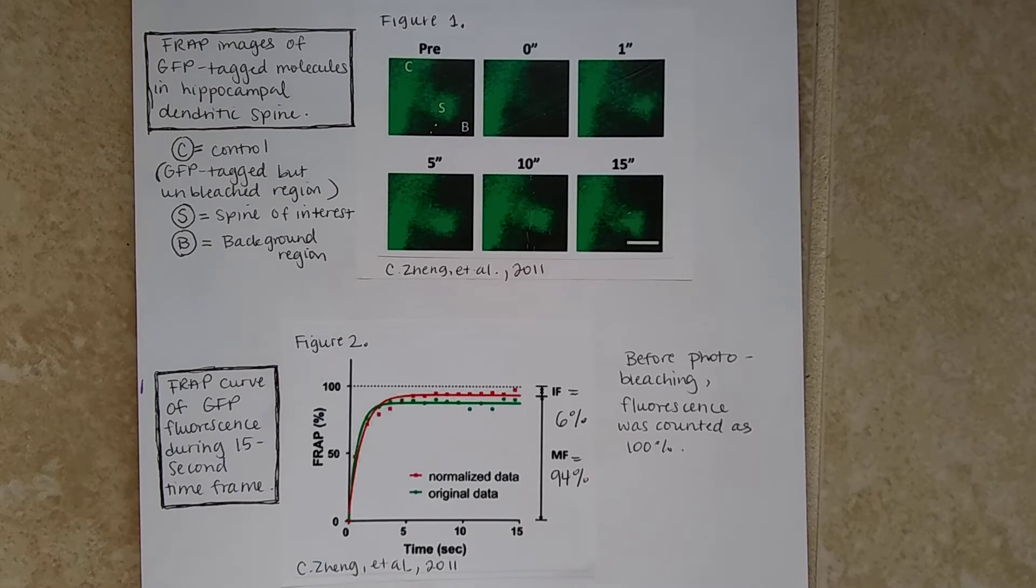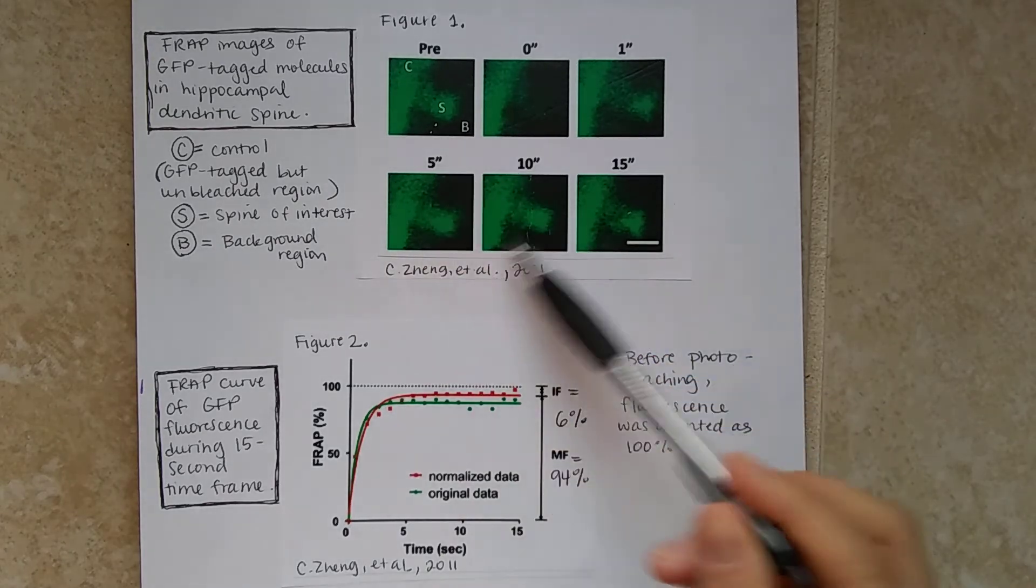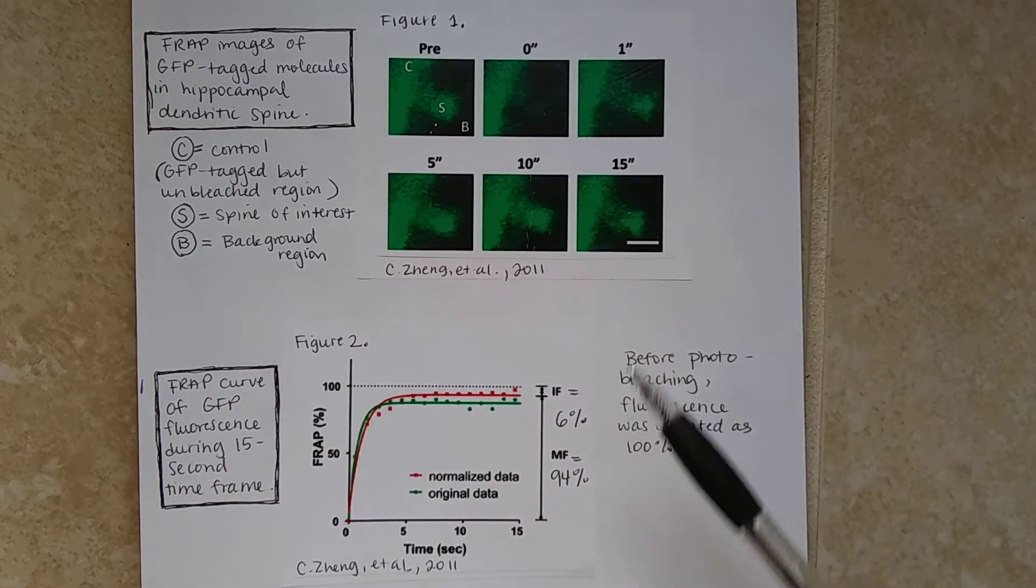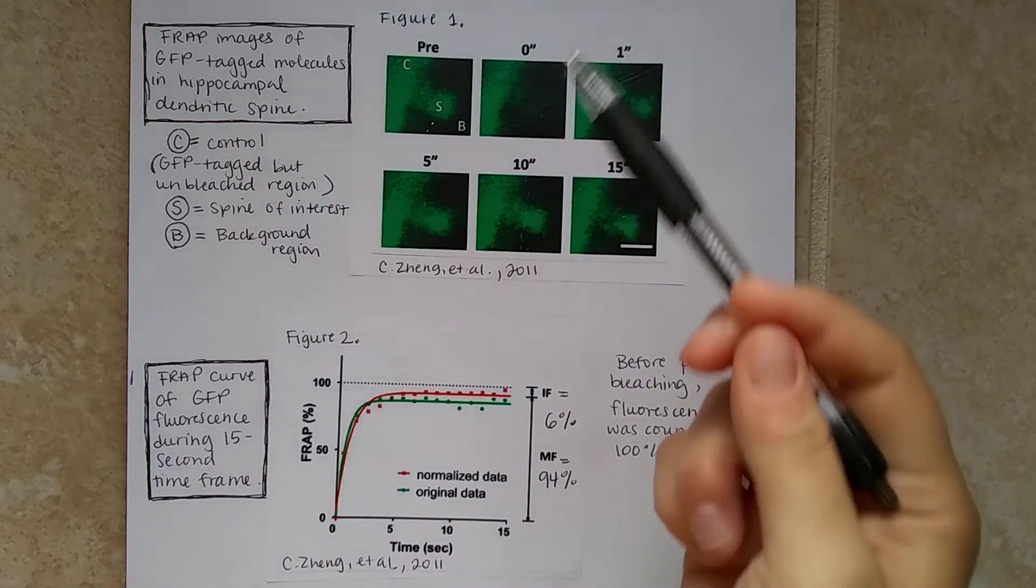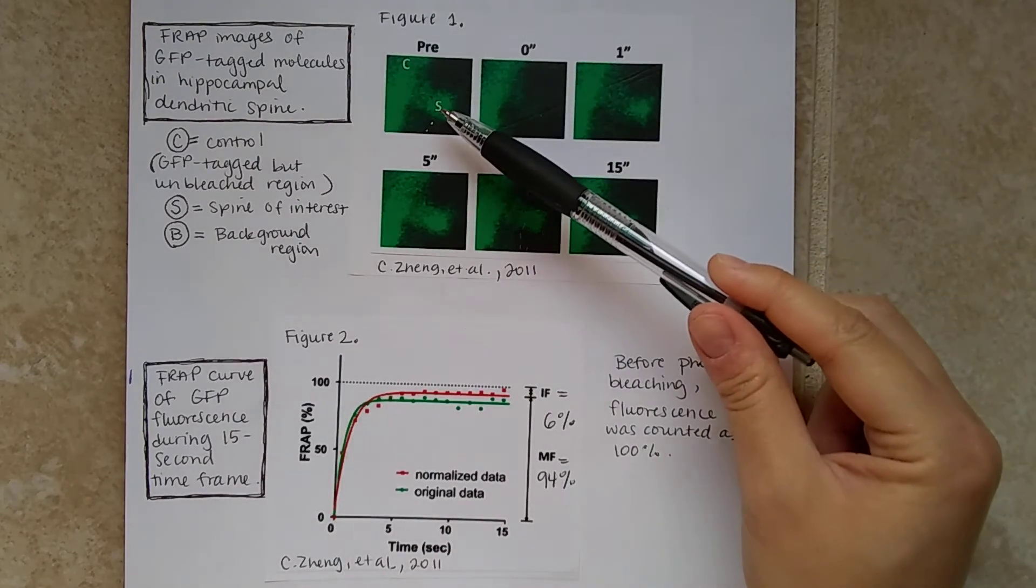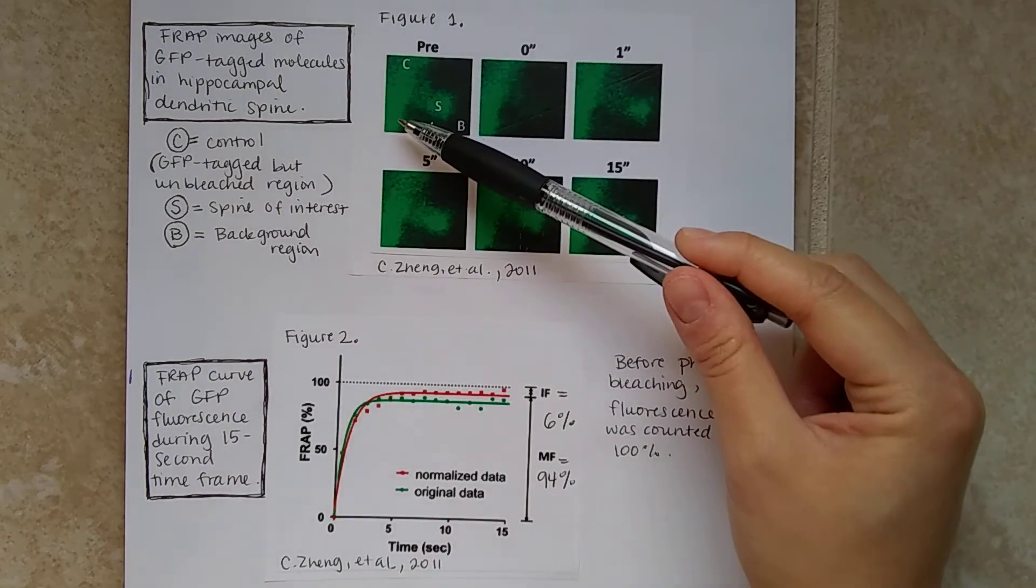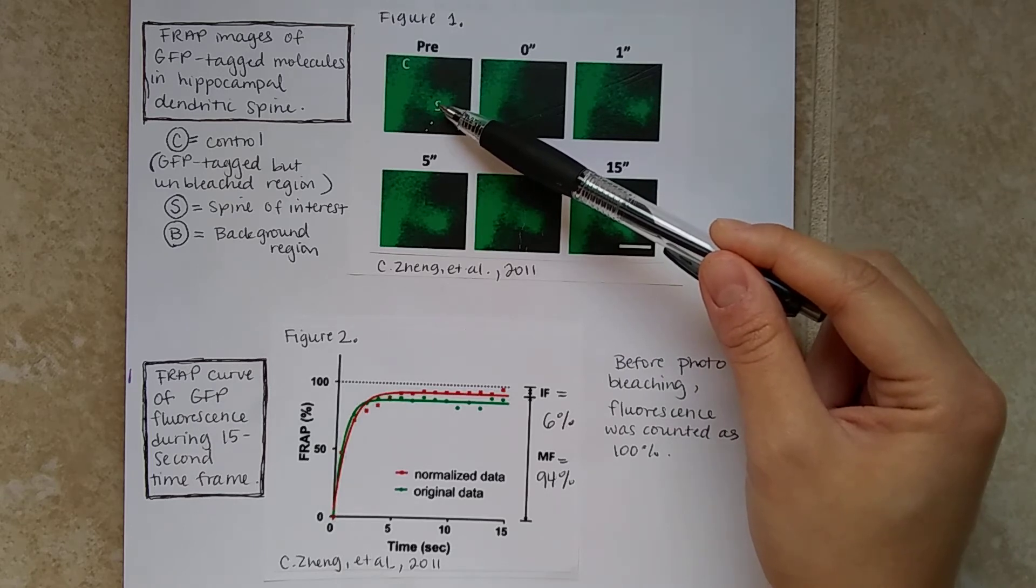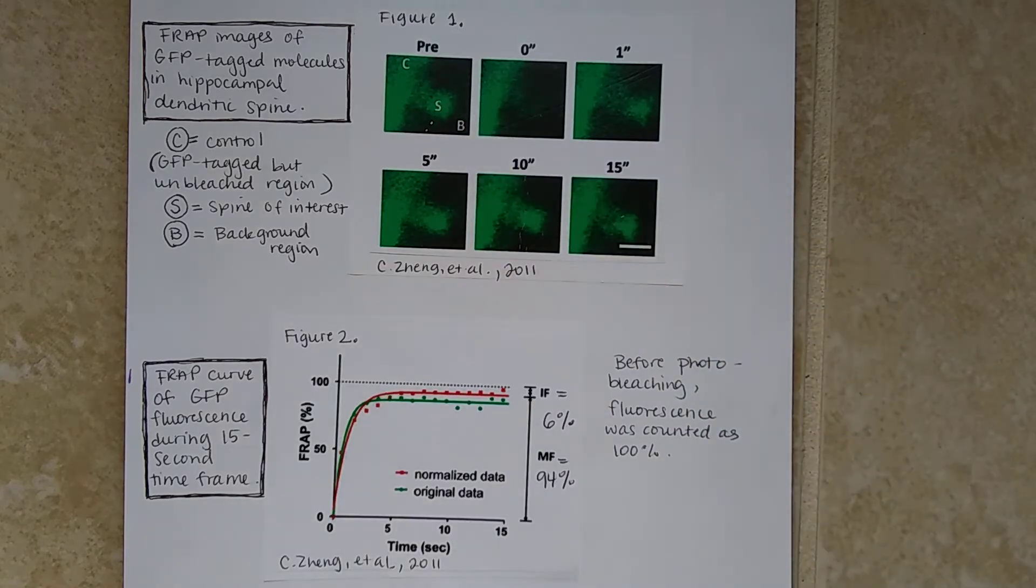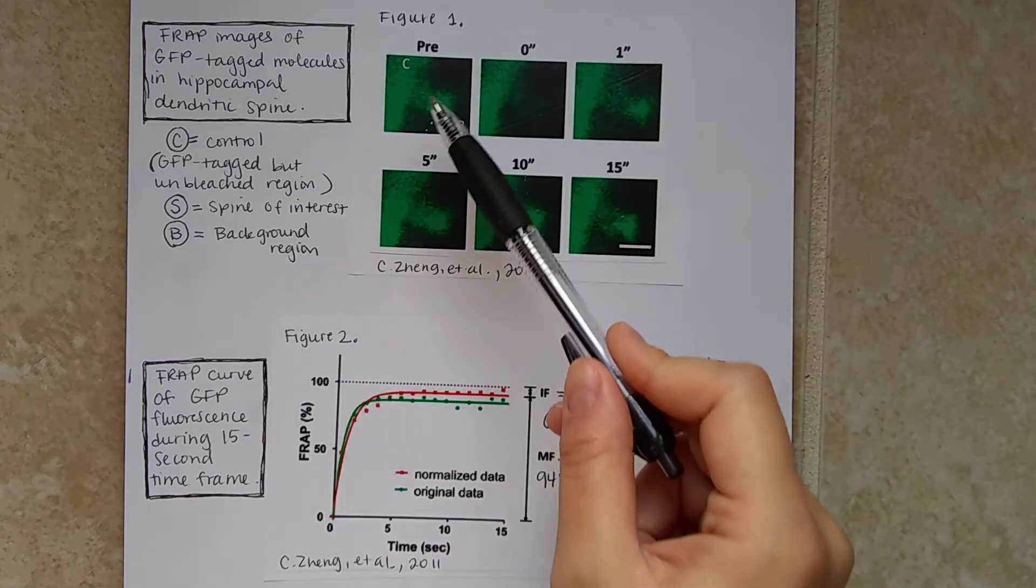So that's what we're going to be looking at answering with FRAP and by looking at the information found in this article. So from what they found after doing FRAP, these are the images that they attained, the GFP tag molecules in hippocampal dendritic spine. So before it was photobleached, you can see that the spine is very much expressing fluorescence from the GFP.